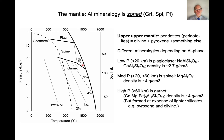The problem in trying to get the mantle to melt is that the typical geotherm — the distribution of temperature as a function of depth or pressure — is not near the melting curve. Above the melting curve the mantle can be melted, and below it, it cannot. So the question becomes: how does the mantle ever melt?